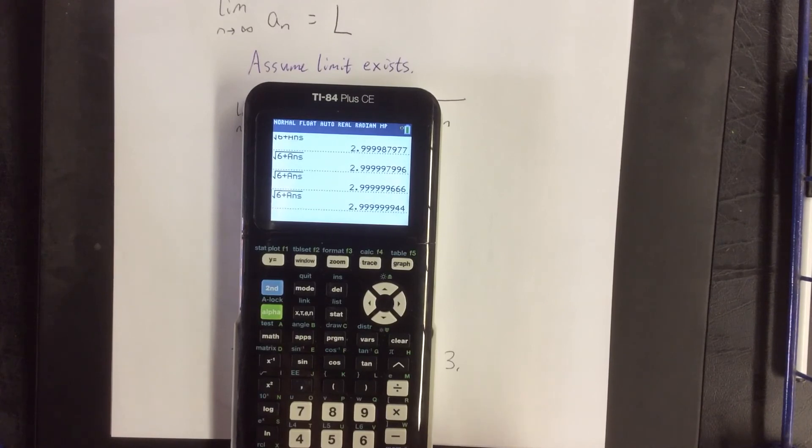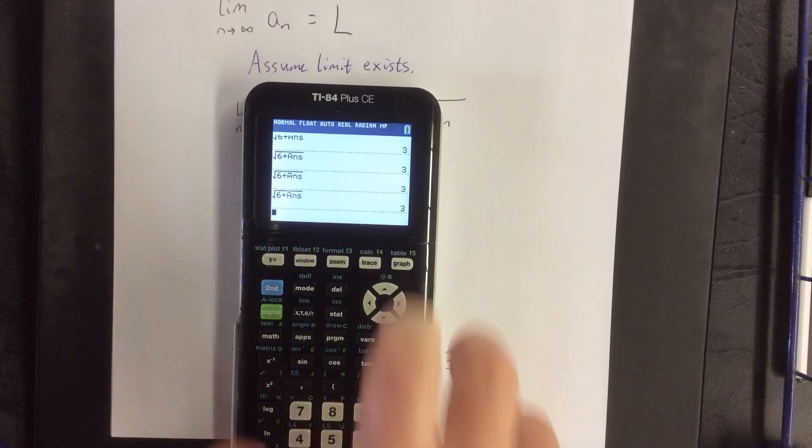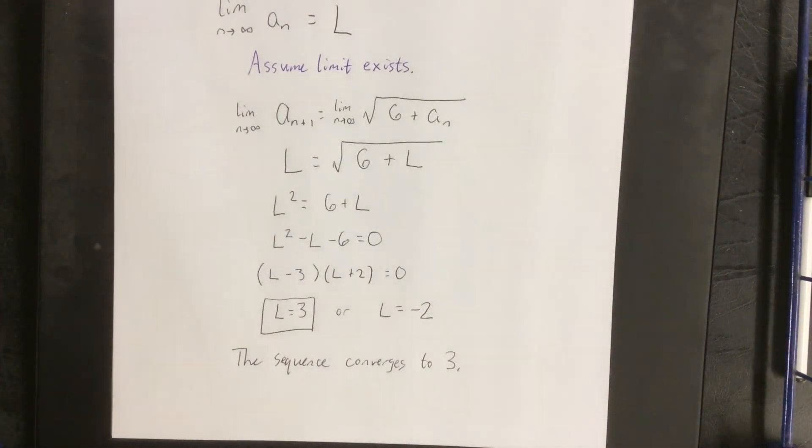By pressing enter over and over we're seeing subsequent terms of the sequence until eventually the calculator can't tell the difference between our number and the number 3. Now this doesn't prove that the limit is 3. This is a good way to convince ourselves that 3 is the correct answer. The work that we showed is how we actually prove that the sequence converges to 3.